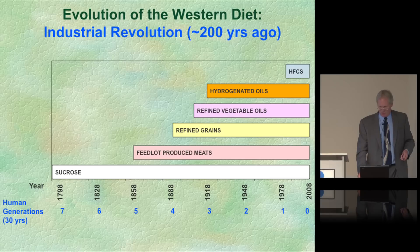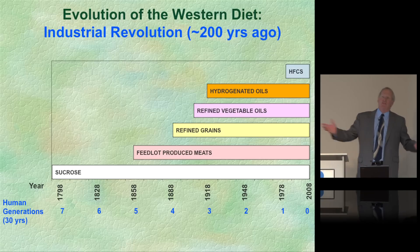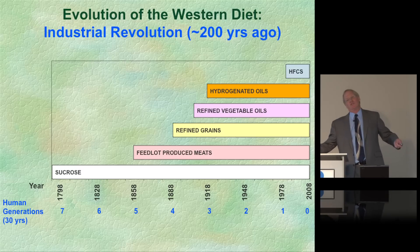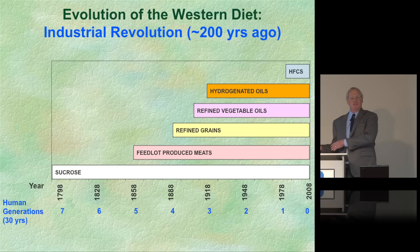Hydrogenated vegetable oils came a little later still, and high fructose corn syrup — when I was young, this stuff simply didn't exist.